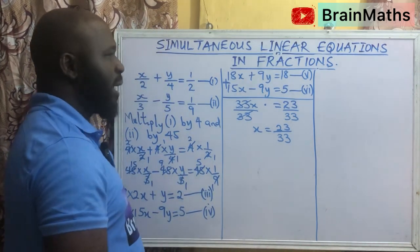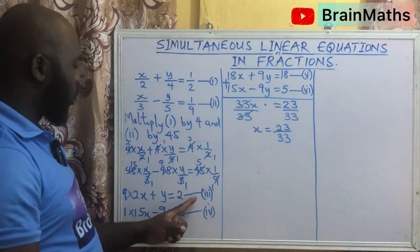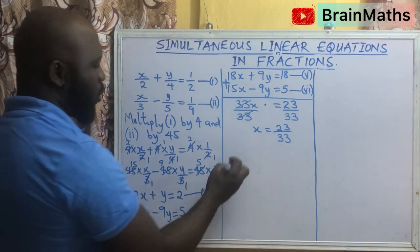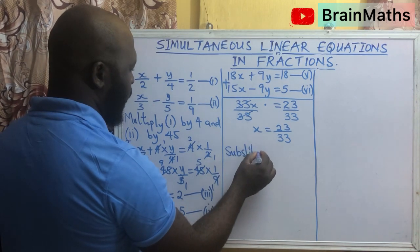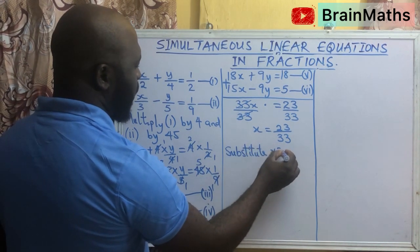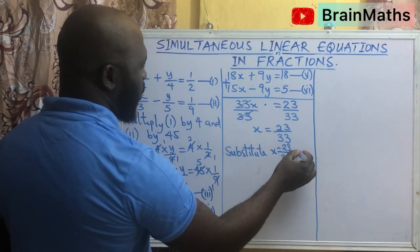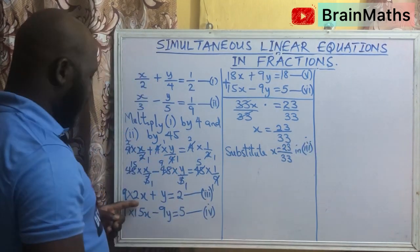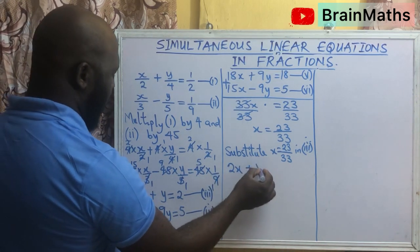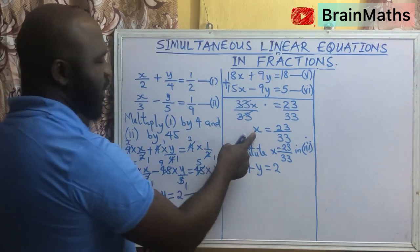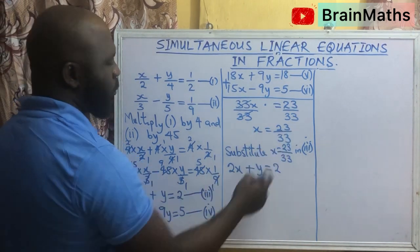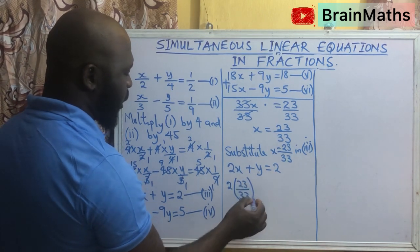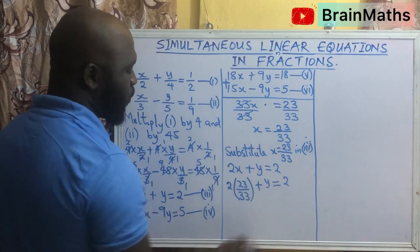Having gotten the value of x, the next thing for us is to come back to equation 3 and substitute this value of x to get a value for y. So we substitute x equals 23 over 33 in equation 3. Our equation 3 is 2x plus y equals 2.